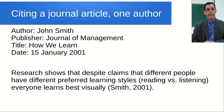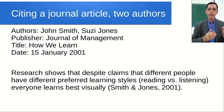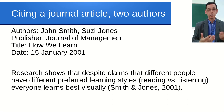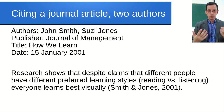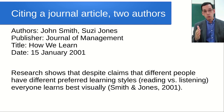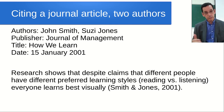Now let's imagine we are citing a journal article that has two authors instead of one. In this case we have John Smith and Susie Jones - same article details. We simply write 'Smith and Jones' and the date. Do not say 'Jones and Smith' - you need to get the authors in sequence. The ordering of the authors actually does make a difference. In this case, Smith is the first author and Jones is the second author. We write 'Smith and Jones, comma, the date.'